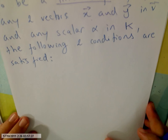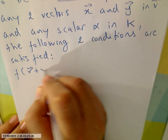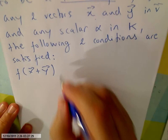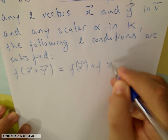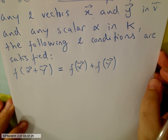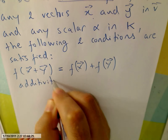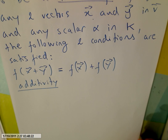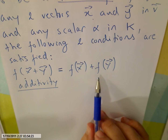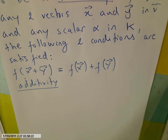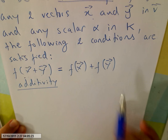The first condition: f of x plus y equals f of x plus f of y. This property is called additivity. Any function that has this property is called an additive function or an additive map.